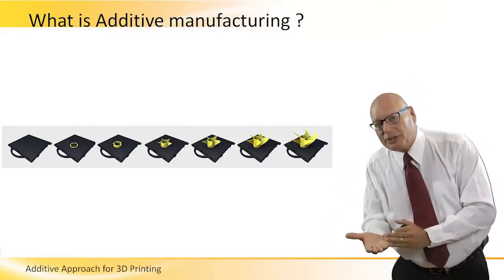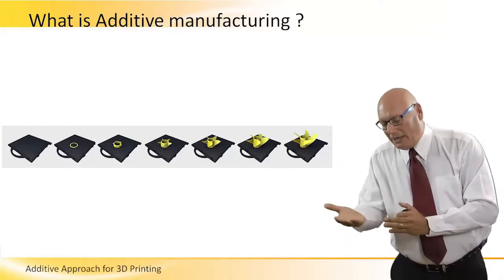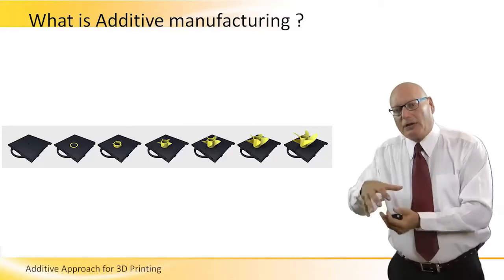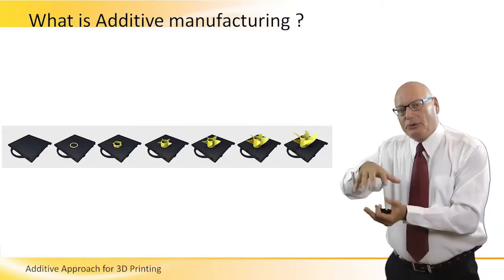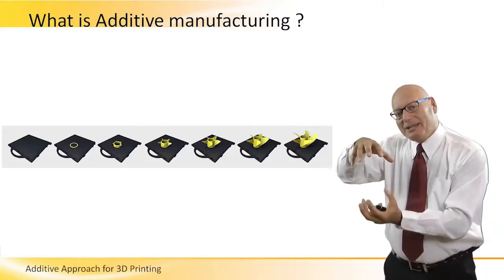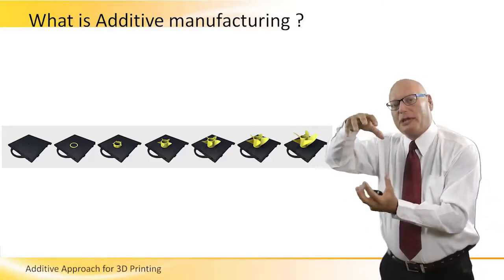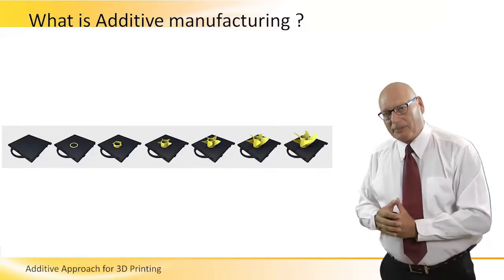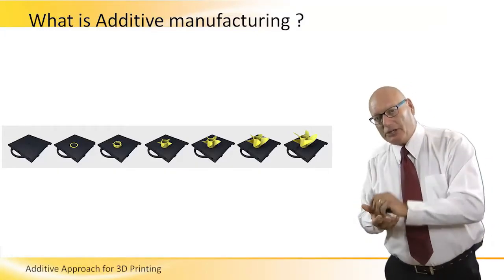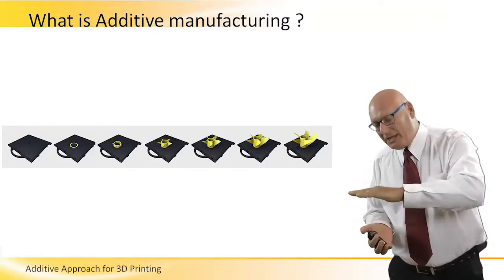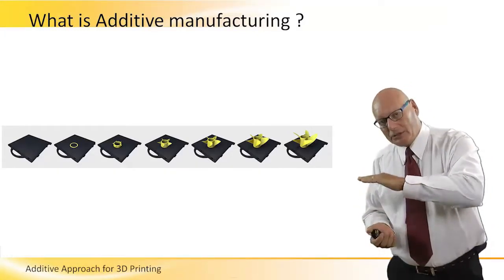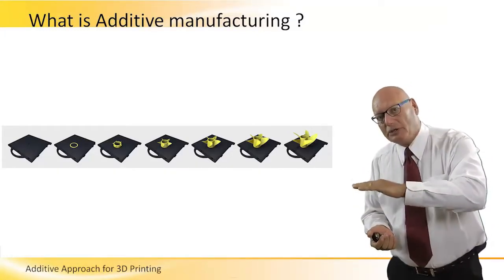So that's additive manufacturing — we start from nothing, layer after layer we add material, and we basically build the third dimension. It's a combination of many 2D layers each, coming up with a 3D object.